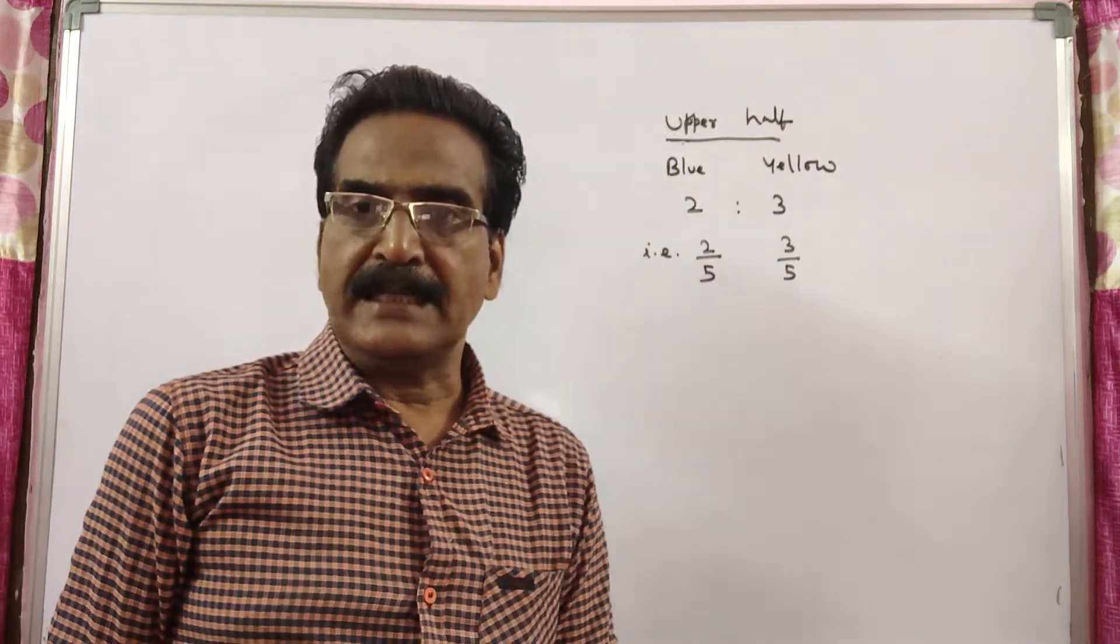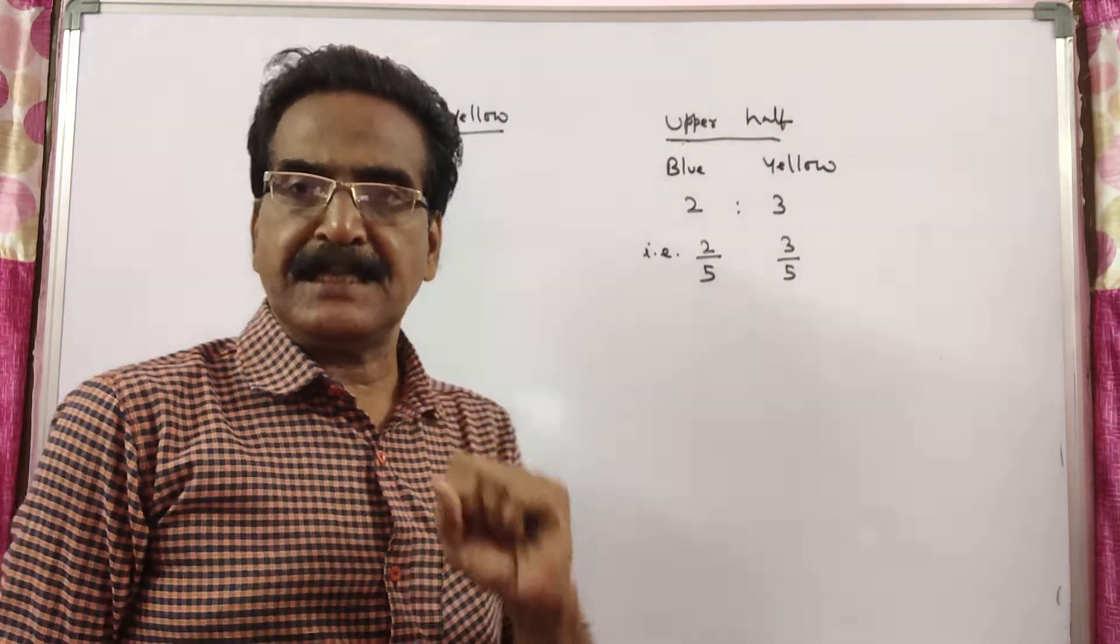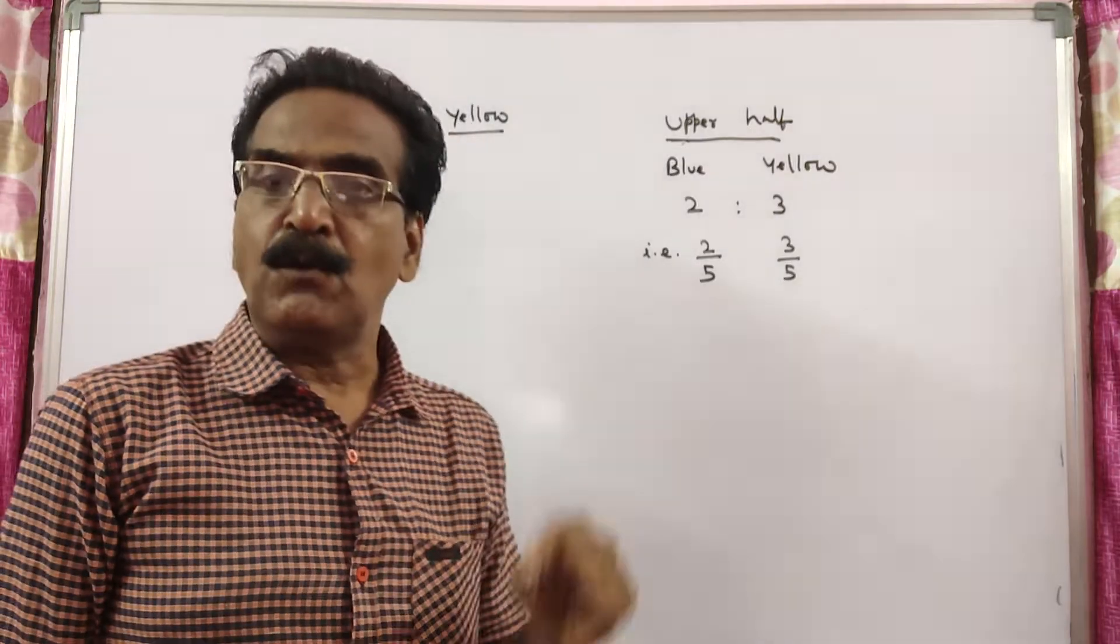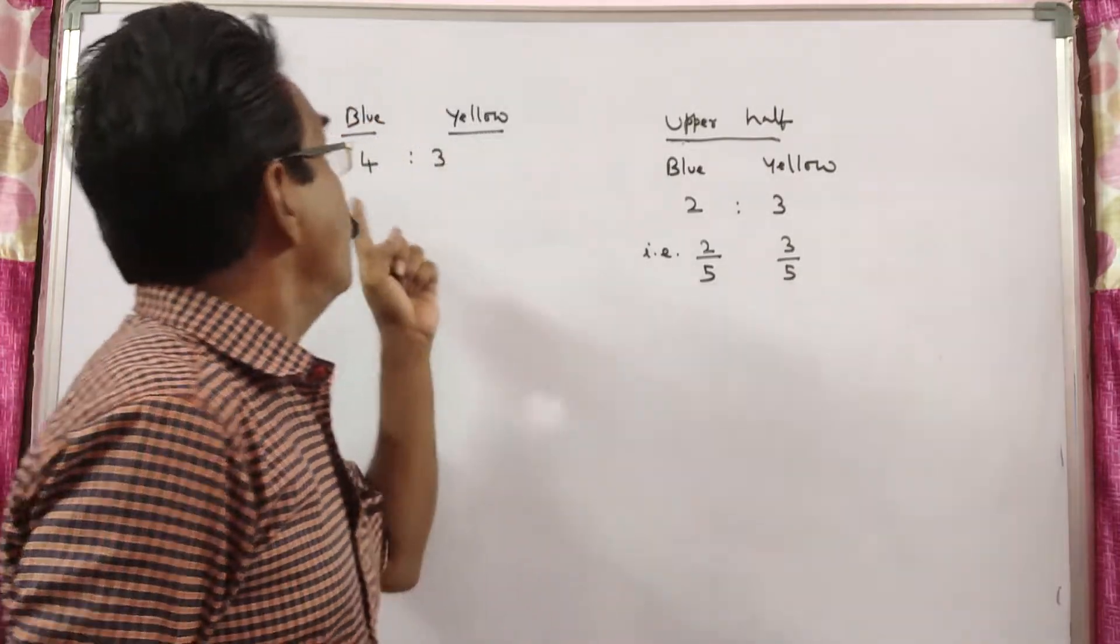Hi friends, good morning. Please look at the next problem in ratio and proportion. See friends, in a colored picture of blue and yellow, the colors blue and yellow are used in the ratio 4 is to 3.